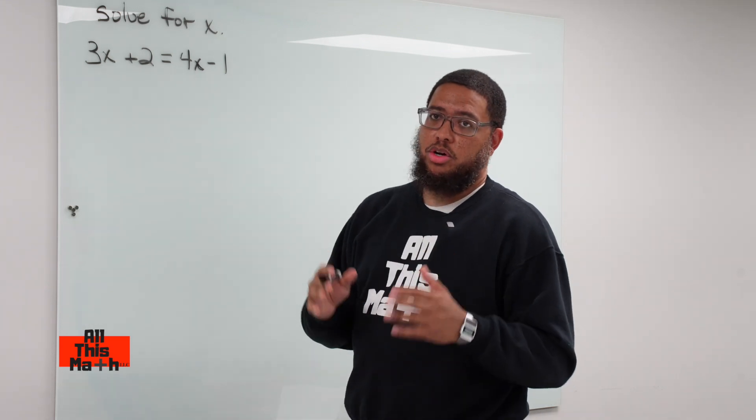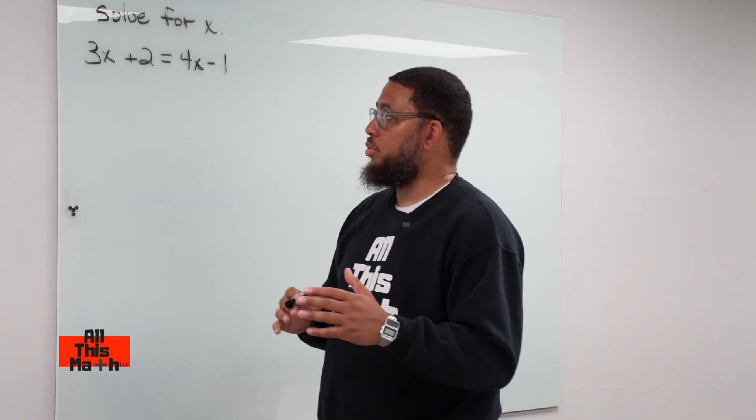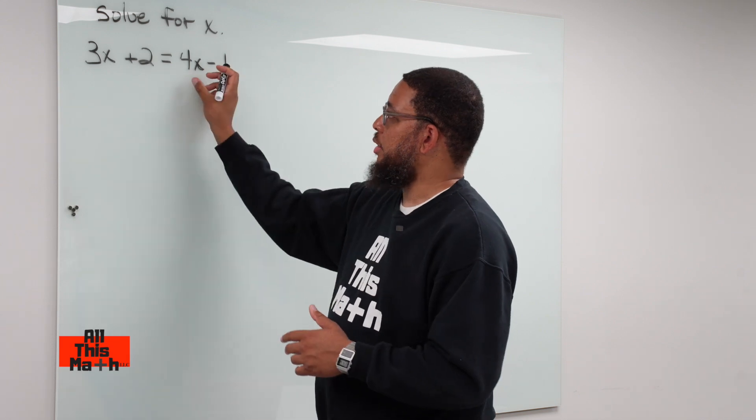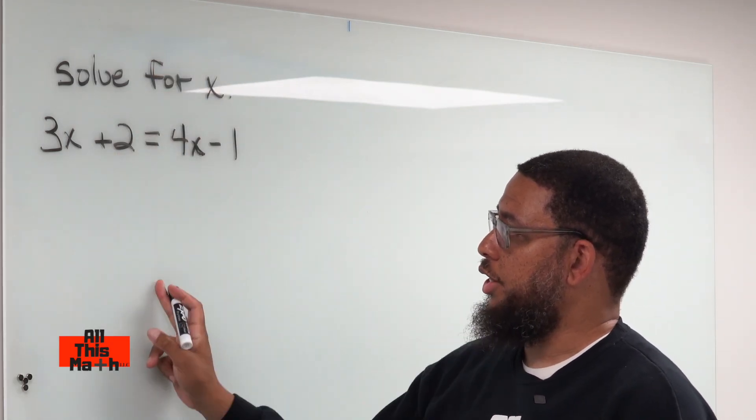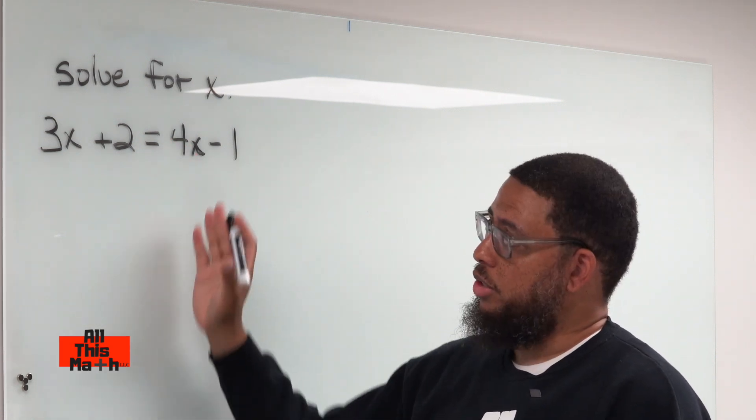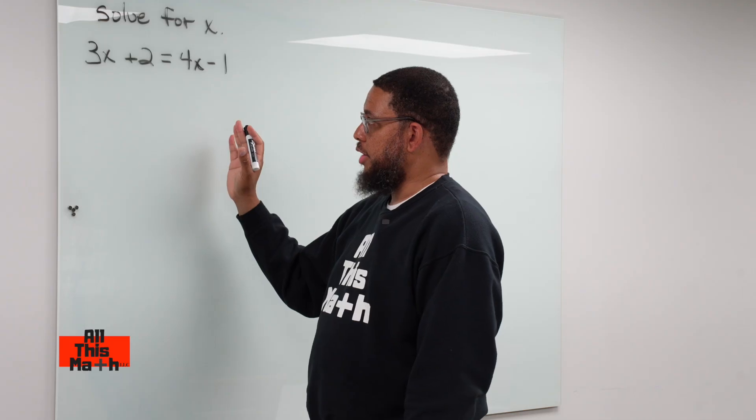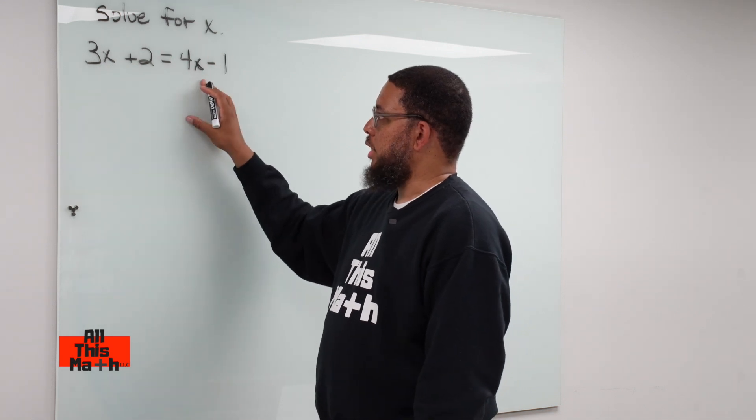Now, I want to talk about this method called transposing. What is transposing? Transposing is essentially when you just pick numbers up and move them to other sides of the equal sign. The equal sign divides the equation into a left side and a right side. I got an x term on the left side and an x term on the right side.